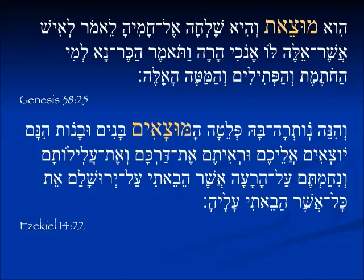In Genesis 38, Tamar has accomplished her ruse against Judah. Now people know that she's pregnant, and she is being brought out — 'he mutsa'im' — she's being brought out of the father's tent to be examined. And what does she come with? She says: whoever's seal and cord and staff this is, this man is the father. She was a crafty lady.